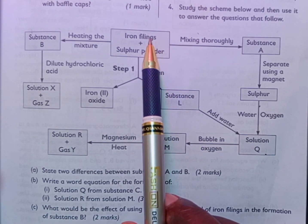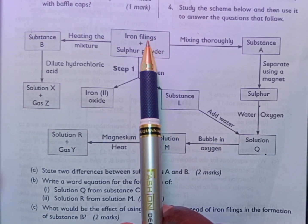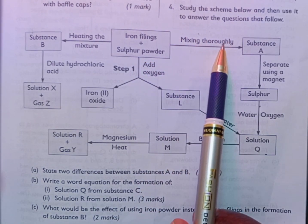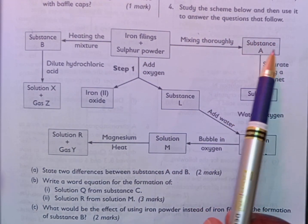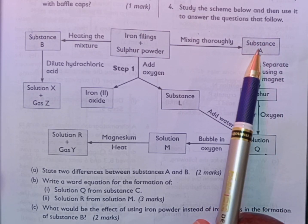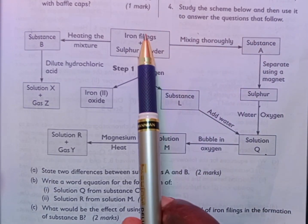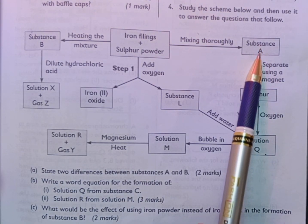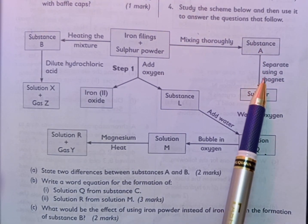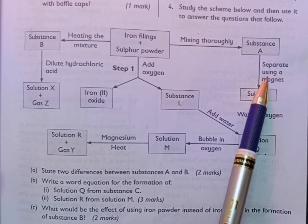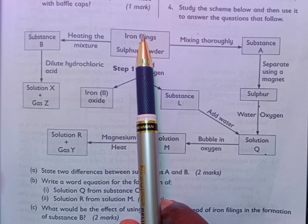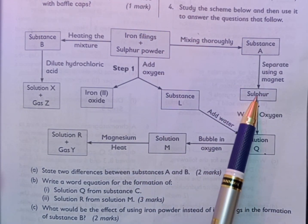We go back to where we started — iron filings. We also have sulfur powder. You mix them thoroughly and then you obtain substance A. Remember, substance A is a mixture of iron and sulfur. Then iron and sulfur are separated using a magnet, the simple reason being iron is magnetic and therefore it is going to be attracted by the magnet, leaving the sulfur behind.